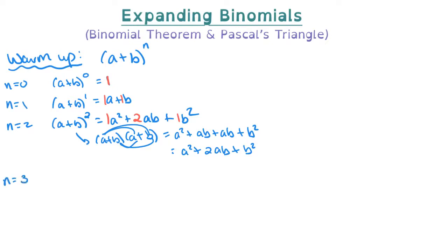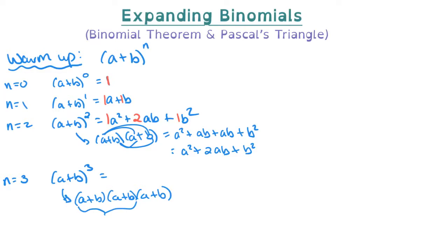Let's do n equals 3, so a plus b cubed. That's a plus b times a plus b times a plus b. We can only do two at a time, but we already computed a plus b squared above, so let's use that as a time saver. That's a squared plus 2ab plus b squared, multiplied by that third a plus b.